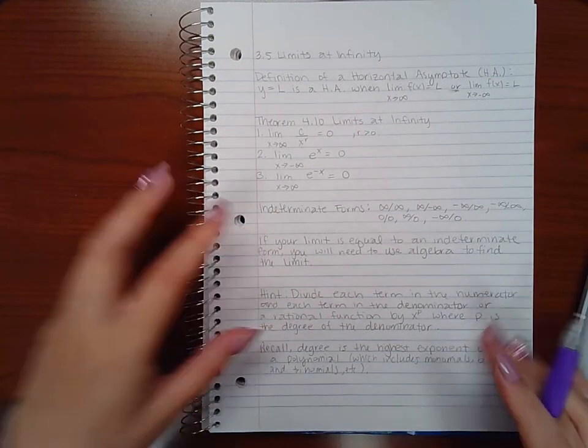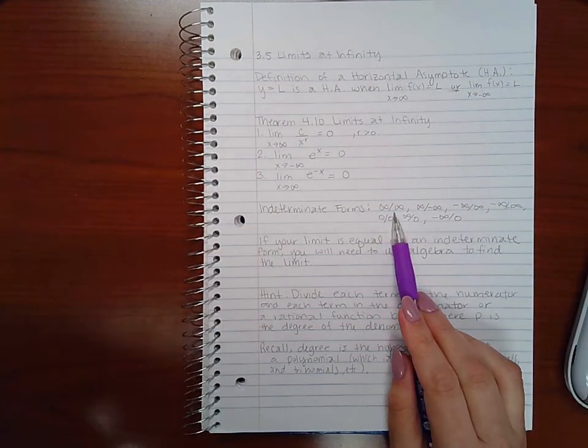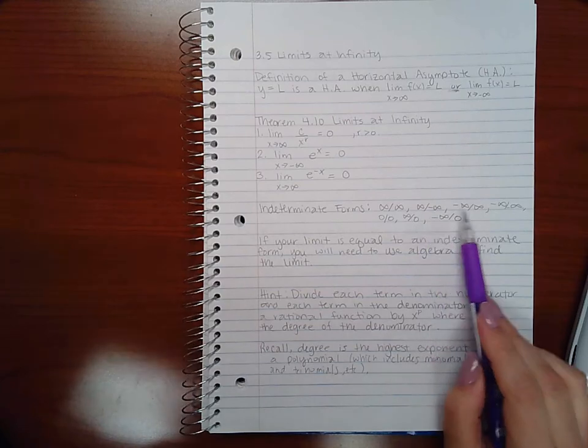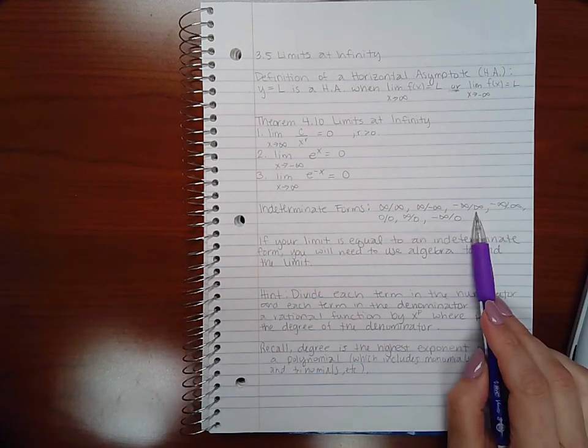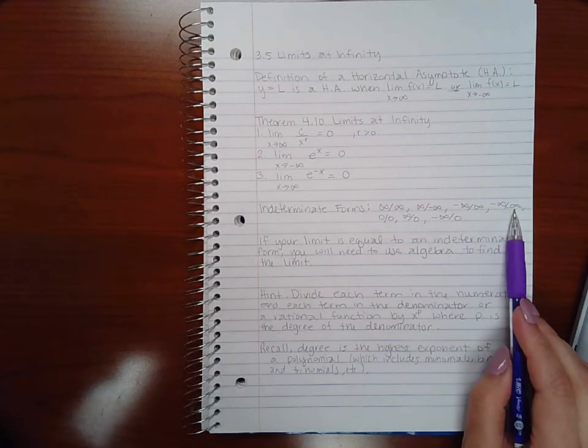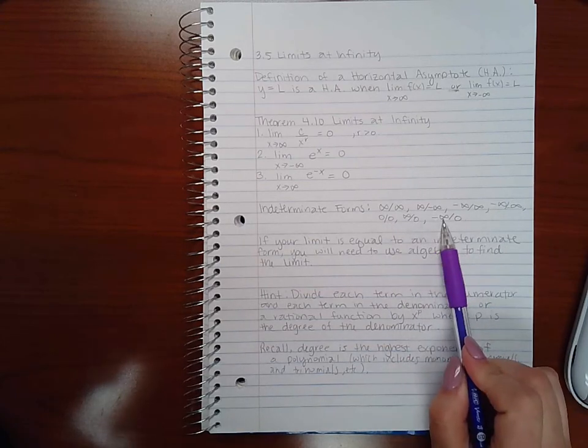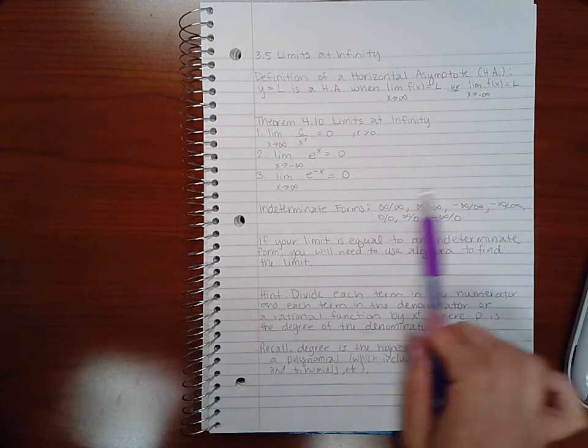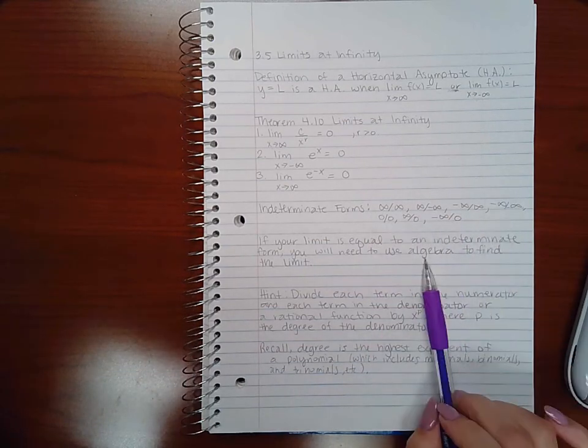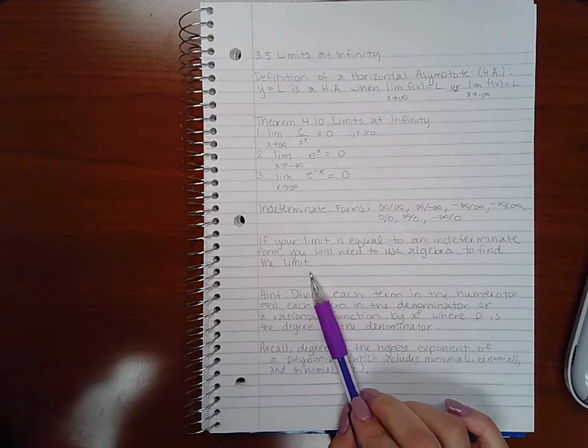Then the indeterminate forms are going to be infinity over infinity, infinity over negative infinity, negative infinity over infinity, negative infinity over negative infinity, zero over zero, infinity over zero, or negative infinity over zero. If you get any of these indeterminate forms, you need to use algebra to find the limit.